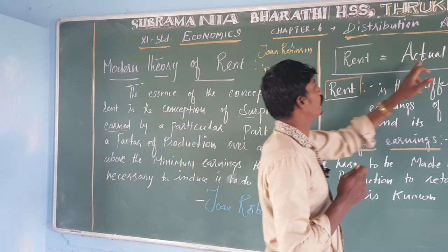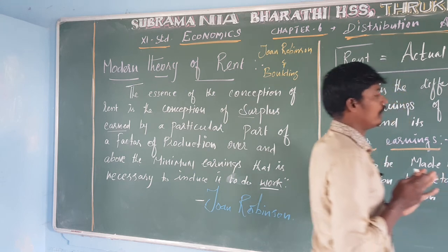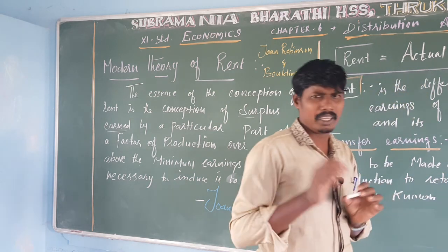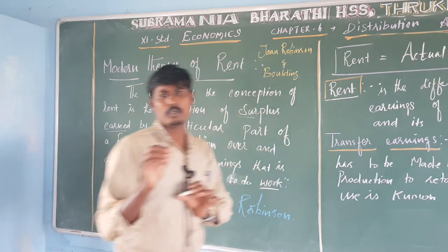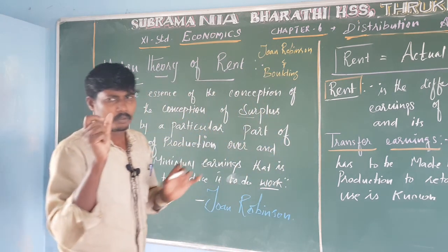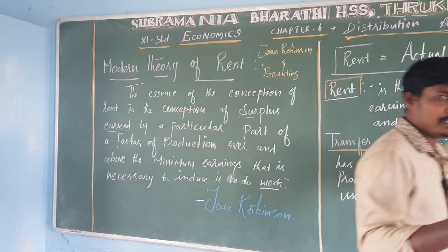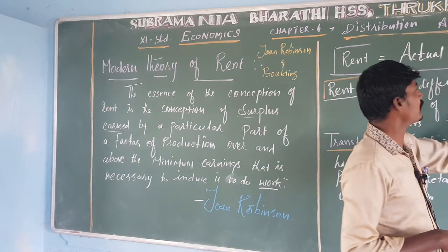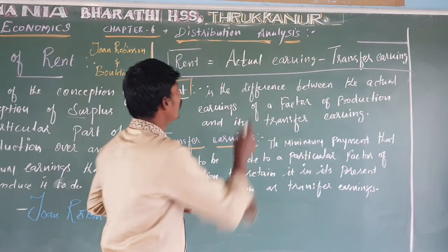If you look at the equation: rent equals actual earnings minus transfer earnings. Actual earnings are what you currently receive. The formula is: Rent = Actual Earnings − Transfer Earnings.